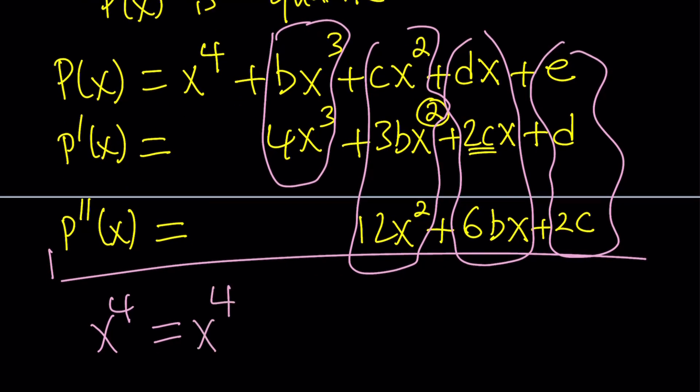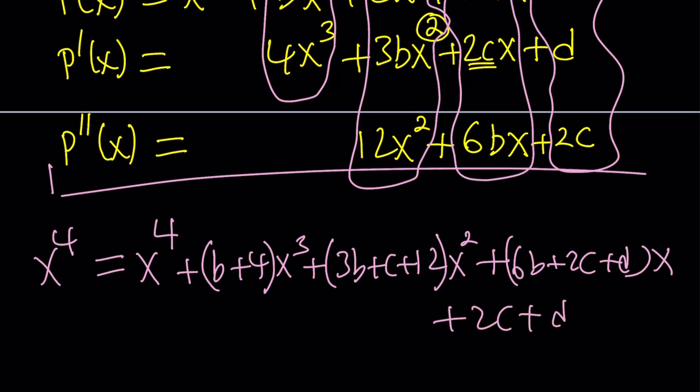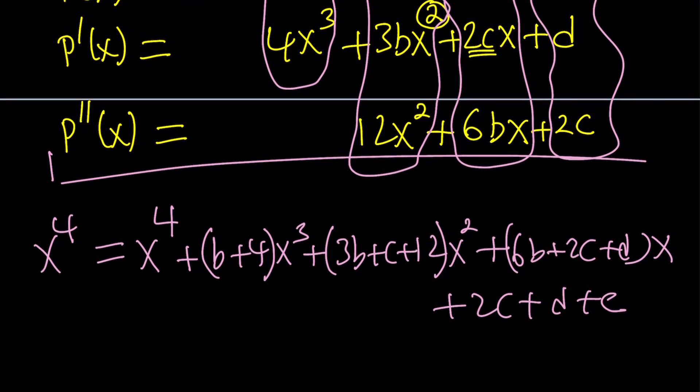I'm getting X to the fourth on the right hand side. Obviously, shouldn't be a surprise. And then this is going to give me B plus four X cubed. By the way, we can cross out the X to the fourth from both sides if you want, but I don't think that's super necessary. I'm trying to move this over here so I have room for the rest of the terms. And then plus the coefficient of X squared is going to be 3B plus C plus 12. That's times X squared. And then I have 6B plus 2C plus DX. And finally, my constant is going to be 2C plus D plus E.